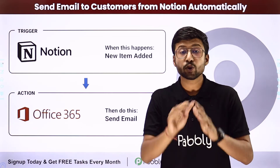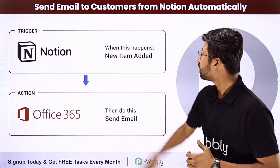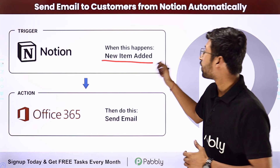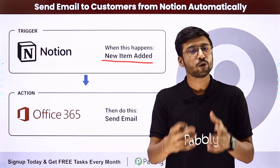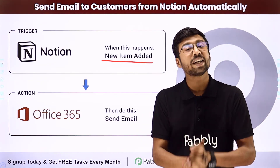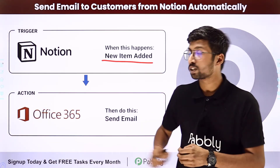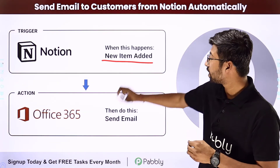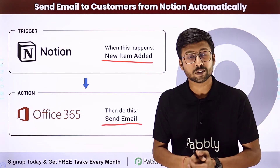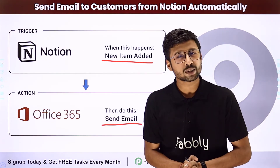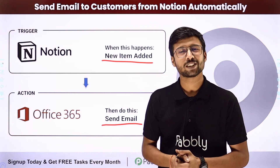You can actually automate this process. In this automation, whenever a new item is created in Notion — whenever details of a new customer or client are added — automatically, to the same client at their email address which we are going to enter, an email will be sent from our Outlook account. If you want to know how to set up this automation, just come with me to my screen.